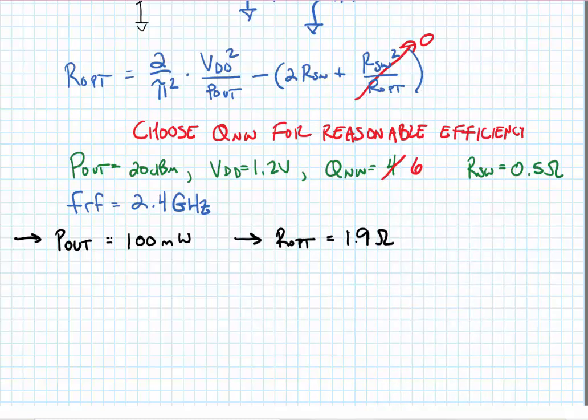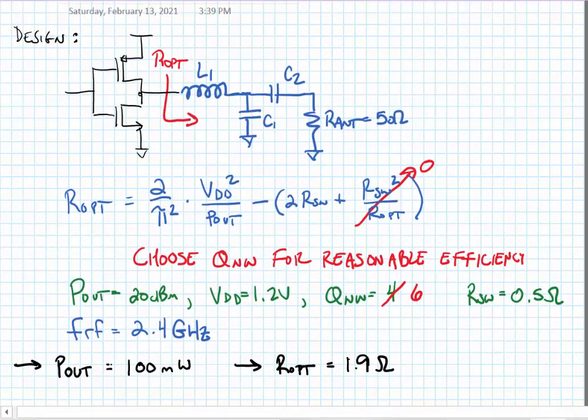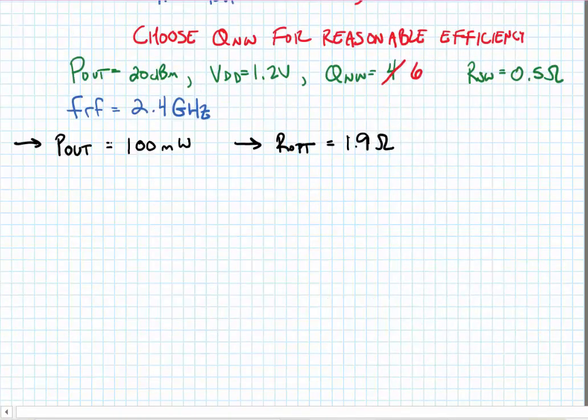Now the problem is to take the matching network that I've drawn, this tapped capacitor matching network, and make it transform 50 ohms to R_opt equal to 1.9 ohms. One additional piece of information I didn't give was that the frequency of operation would be 2.4 gigahertz. I'm going to use that for the time being.